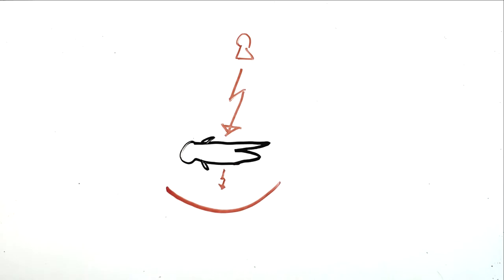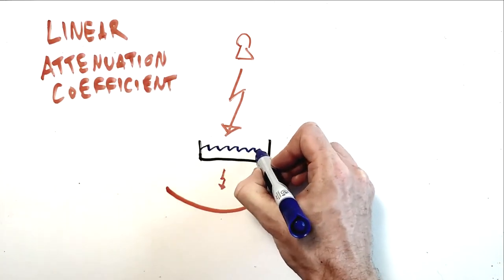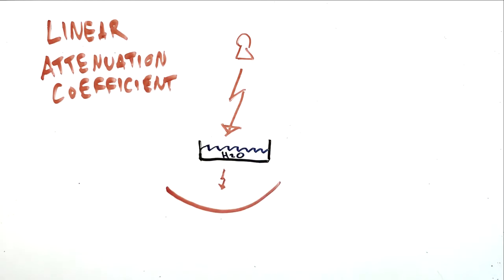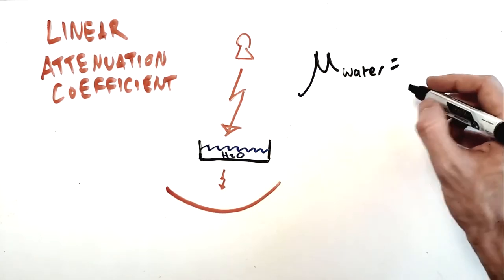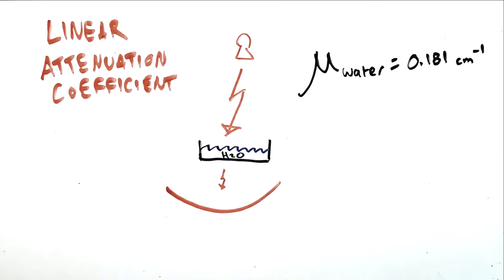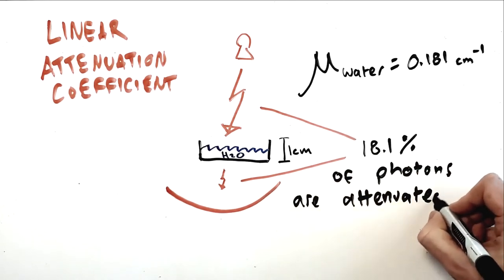The linear attenuation coefficient is denoted with the Greek letter mu and is expressed in units of per centimeter. For example, the linear attenuation coefficient of water, denoted as mu water, is equal to 0.181 per centimeter. This means that 18.1% of photons from a diagnostic x-ray beam passing through 1 centimeter of water will be absorbed.